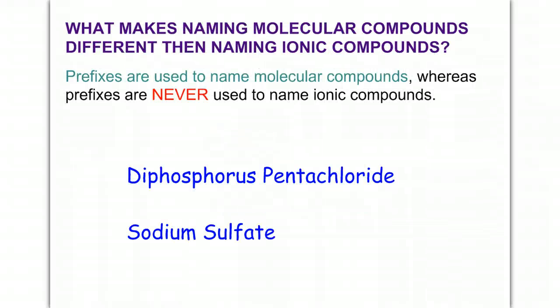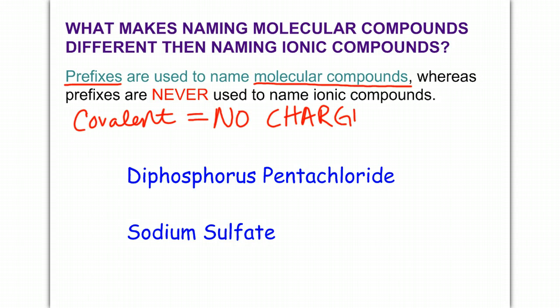All right, so what makes naming molecular compounds different from naming ionic compounds? We're going to use prefixes to name our molecular compounds. Remember, because these are covalent, and this is very important, there are no charges because they're sharing the electrons, not transferring them.